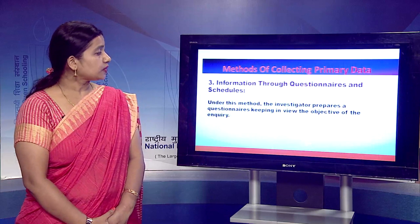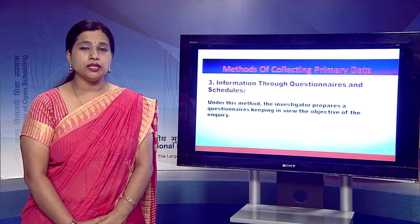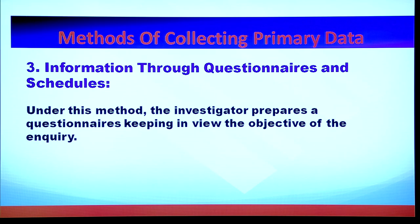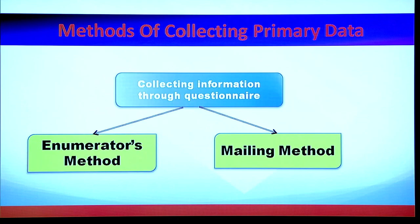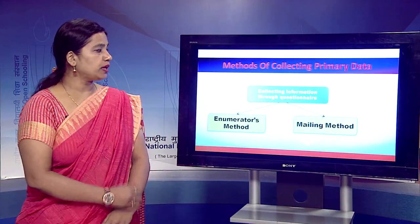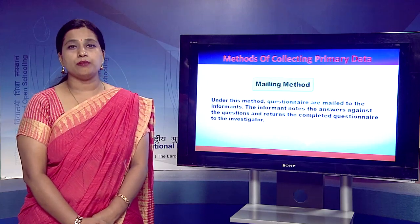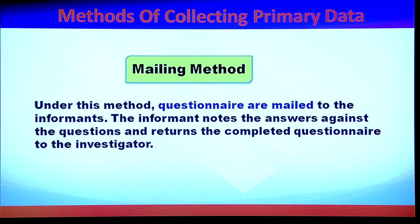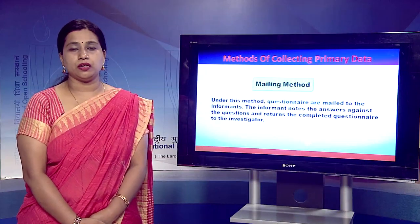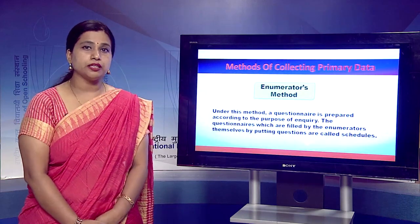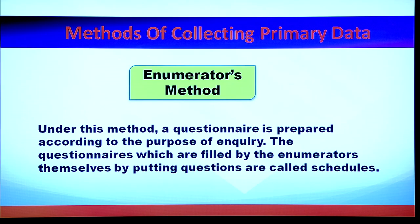The third method is information through questionnaire and schedule. Under this method the investigator prepares a questionnaire and can collect data in two ways: the mailing method and the enumerator method. Under the mailing method, the investigator mails the questionnaire to the respondent, who fills it up and returns it. Under the enumerator method, the enumerator takes the questionnaire to the informant, asks the questions, and fills in the information — such questionnaires are known as schedules.